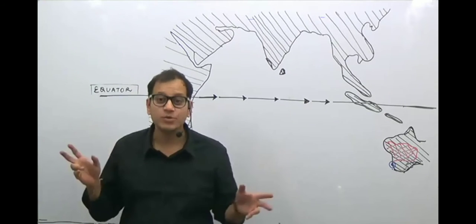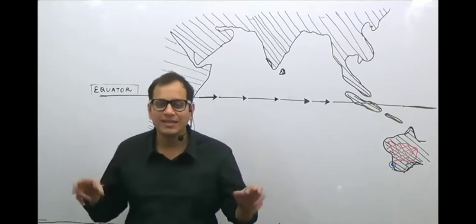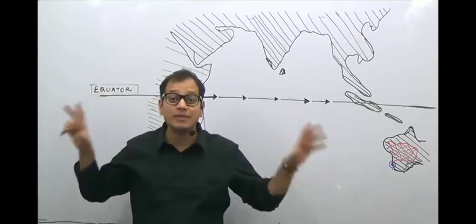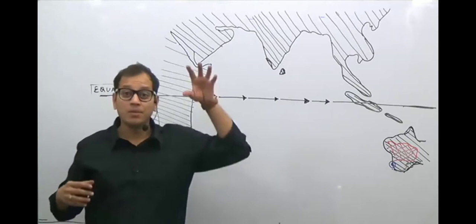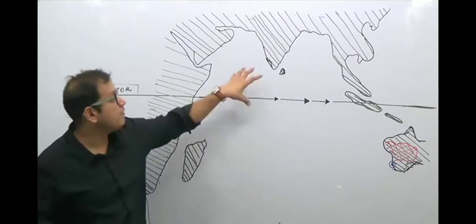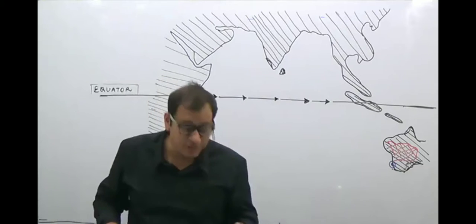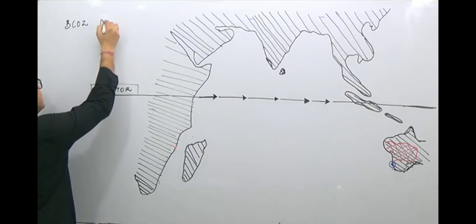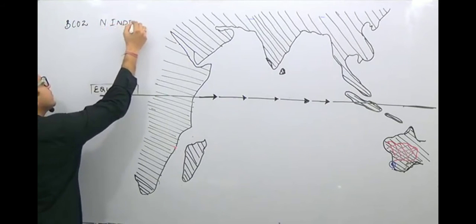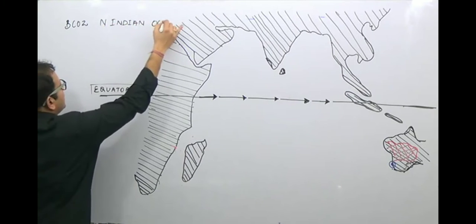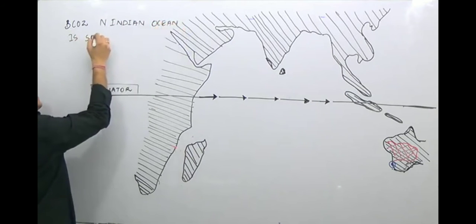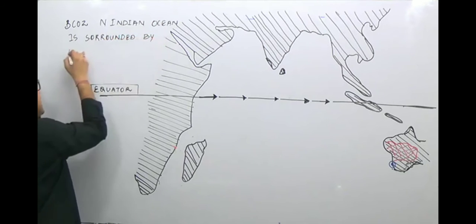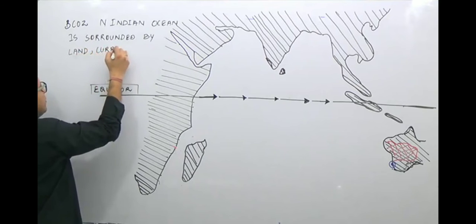We can say that the Indian Ocean is half ocean. What I mean by half ocean is that the northern part of the Indian Ocean is enclosed from all sides — it is surrounded by landmass. Because it is surrounded by landmass, the monsoon winds and the landmass have a major effect on the currents generated in the Indian Ocean system. Because the northern Indian Ocean is surrounded by land, the current system is not well developed.